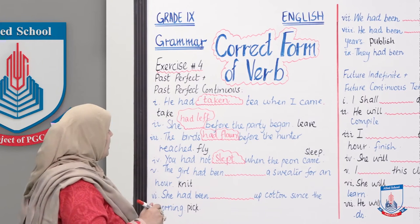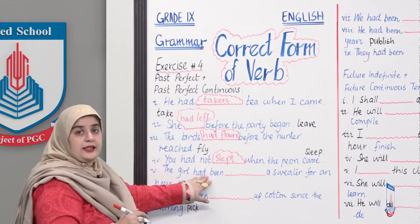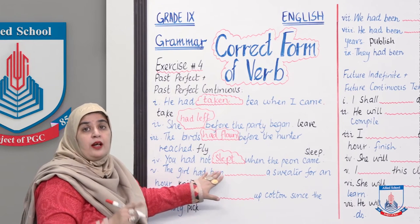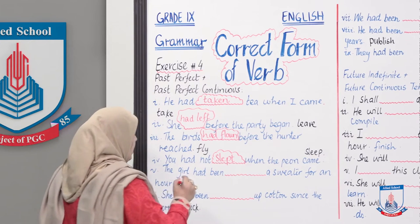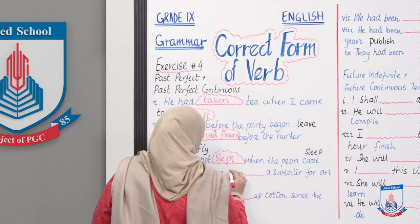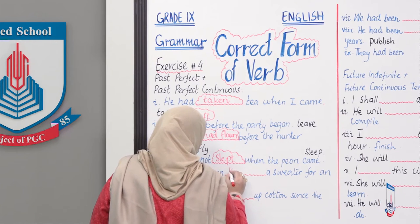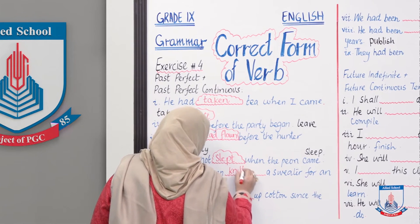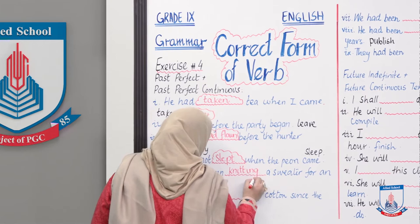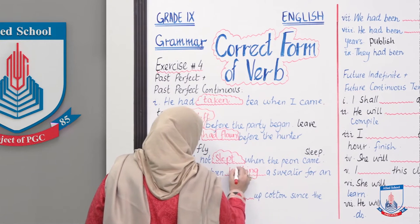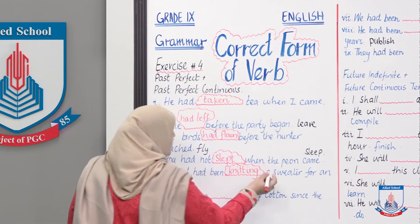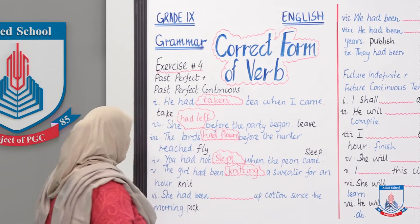Continuous tense mein I-N-G lagta hai. Since it's in the past, we use 'had been' — past perfect continuous. Answer: 'She had been knitting a sweater for an hour.'